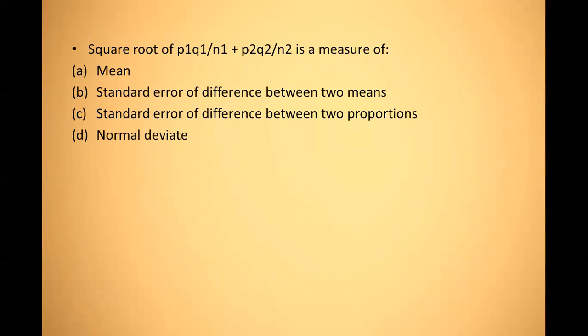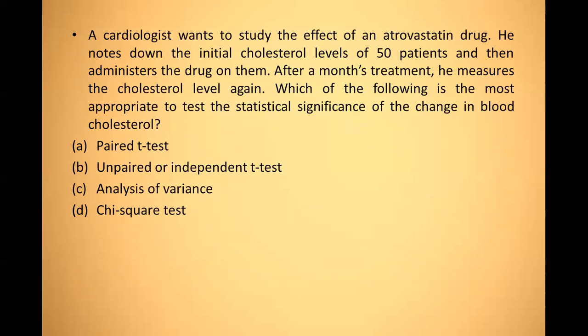The second question: the square root of (p₁q₁/n₁ + p₂q₂/n₂) is a measure of — it is a measure of the standard error of difference between two proportions. The answer is C.